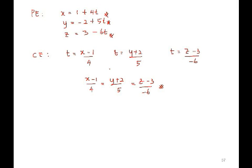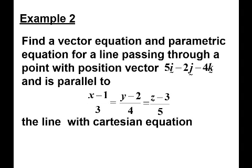Proceed to the second example. So this is example 2. Find a vector equation and parametric equation for a line passing through a point with position vector. So this is your point A.